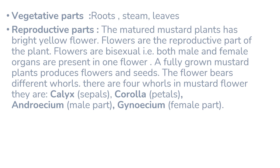Flowers are the reproductive part of the plant. Flowers are bisexual, meaning both male and female organs are present in one flower. A fully grown, matured plant produces flowers and seeds. There are four whorls in the mustard flower. The supporting part is the green-colored sepal, and the petals give the flower its yellow color.